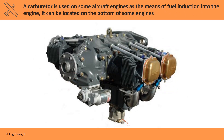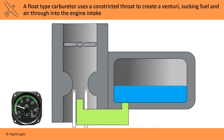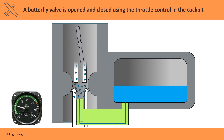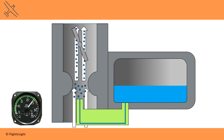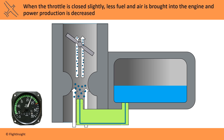A carburetor is used on some aircraft engines as the means of fuel induction. It can be located on the bottom of some engines. A float-type carburetor uses a constricted throat to create a venturi, sucking fuel and air through into the engine intake. A butterfly valve is opened and closed using the throttle control in the cockpit. When the throttle is fully opened, a great deal of fuel and air is sucked in and high power is produced. When the throttle is closed slightly, less fuel and air is brought into the engine and power production is decreased.